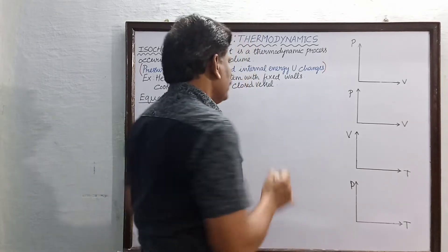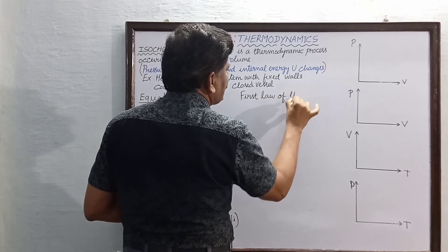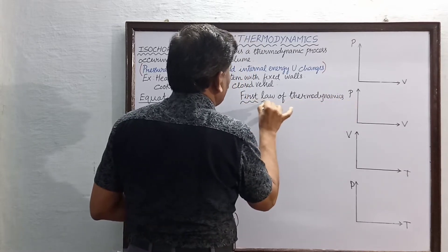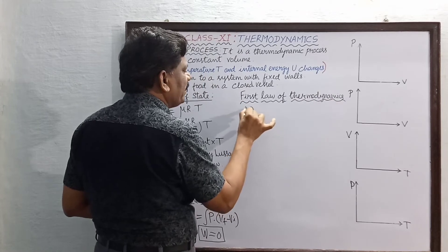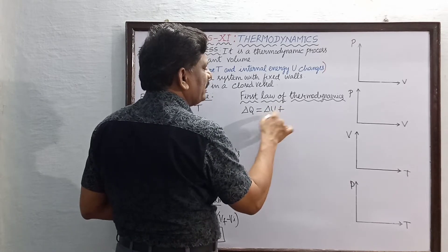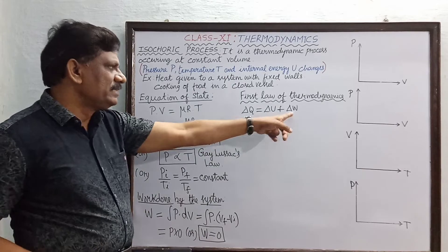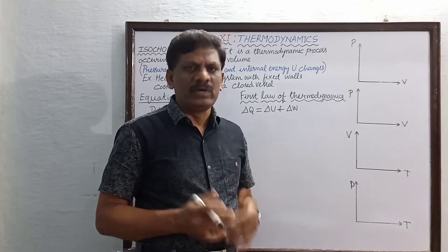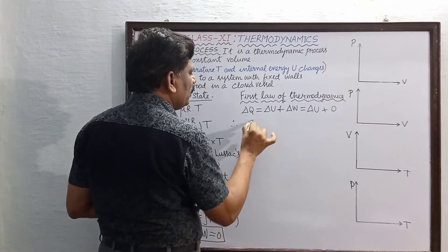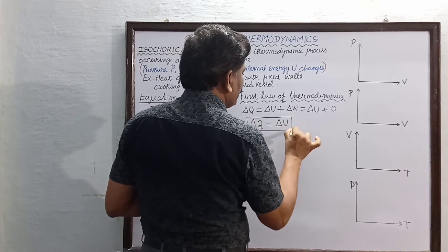Now we apply the first law of thermodynamics to an isochoric process. The general expression is: ΔQ = ΔU + W. Here W = 0 because the gas performs no work — the volume remains constant. So the equation becomes ΔQ = ΔU + 0, giving ΔQ = ΔU.